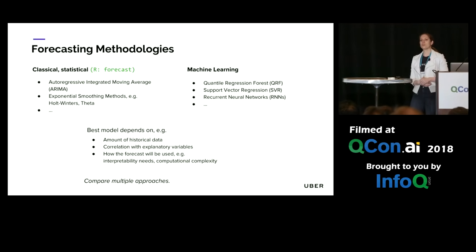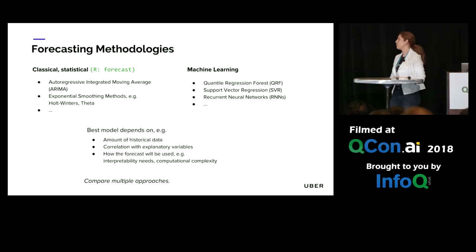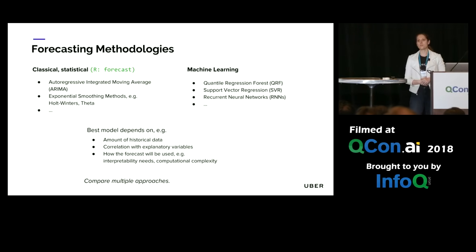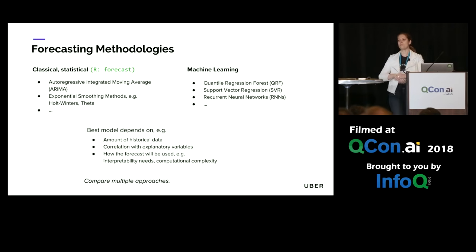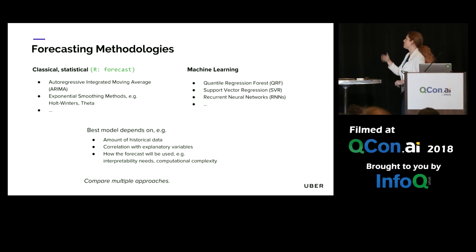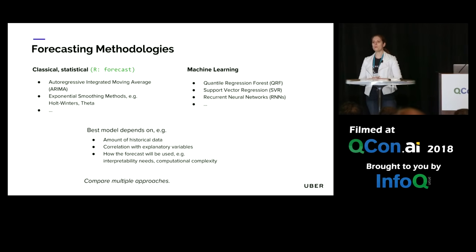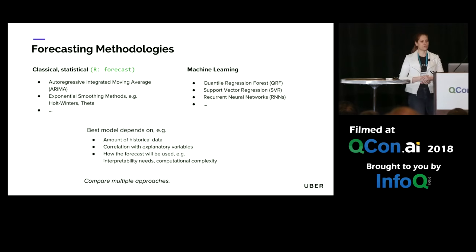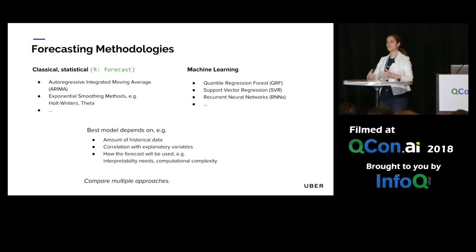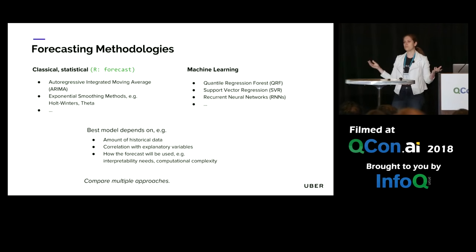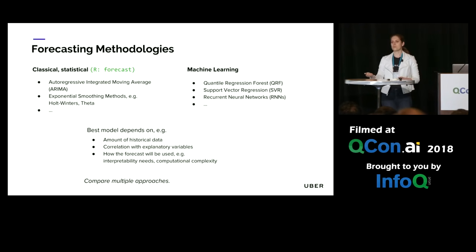In recent years, machine learning and deep learning techniques have been coming into the forecaster's toolkit more and more — for example, the quantile regression forest, a cousin of the well-known random forest, as well as recurrent neural networks, which have been promising in this field. Recurrent neural networks have been particularly useful when a lot of data is available and you don't have any interpretability constraints. Which of these models will be best for your forecasting use case depends on a multitude of factors, including how much historic data is available and what your business constraints are — for example, does the method need to be interpretable?